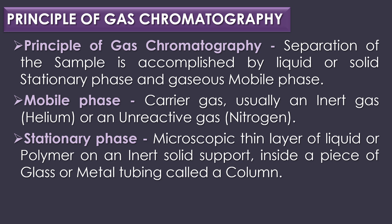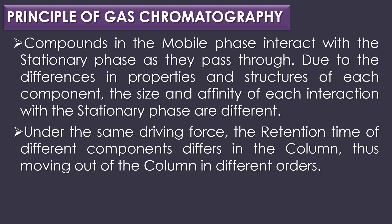The column is analogous to the fractionating column used in distillation. In gas chromatography, components in a mixture are distributed between two phases: the stationary phase and the mobile phase that carries the mixture through the stationary phase. Components in the mobile phase interact with the stationary phase as they pass through. Due to differences in properties and structure of each component, the affinity of each interaction with the stationary phase differs, so the retention time of different components differs in the column, thus moving out of the column in different orders.